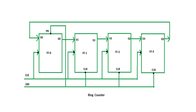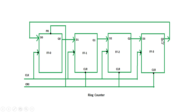Yes, the ring counter acts as a one-hot counter. A four-bit ring counter will act as a four-bit one-hot counter. The output of flip-flop FF0 will be the LSB of the one-hot counter, and the output of FF3, that is Q3, will be the MSB. The reset value of flip-flop 0 (Q0) will be 1, and the reset values of flip-flops 1, 2, and 3 will be 0.